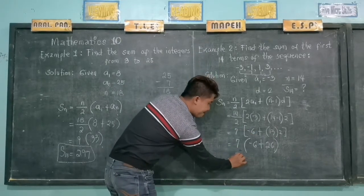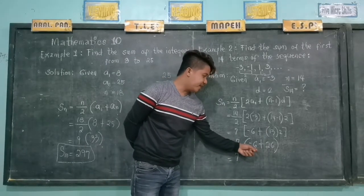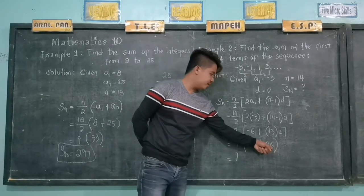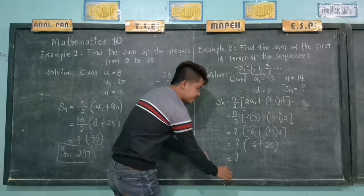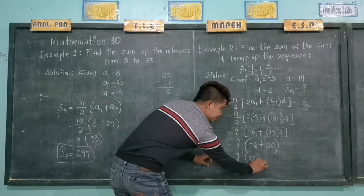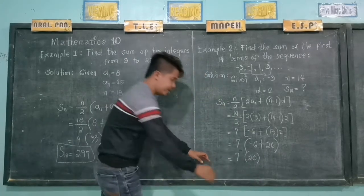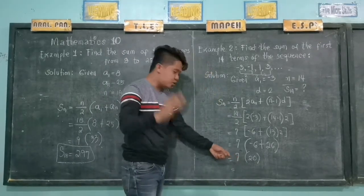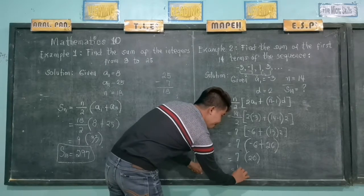Copy 7. We have negative 6 plus 26, that is 20. And then, 7 times 20 is 140.